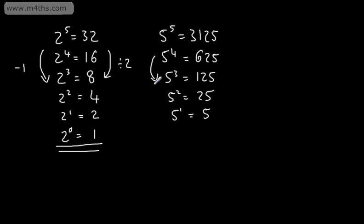We're subtracting 1 on the left-hand side with the power, and we're dividing by the base on the right-hand side. So 5 to the power of 0 is going to be 5 divided by 5, which gives me 1. So 2 to the power of 0 is 1, 5 to the power of 0 is 1, and in general, we can say A to the power of 0 is equal to 1.